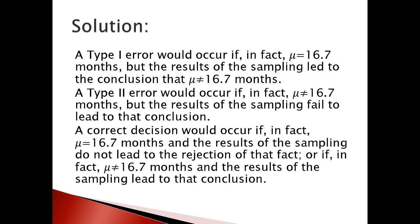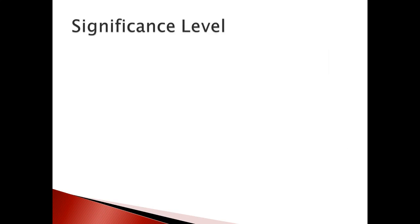Other than these two cases, we make a correct decision. If μ = 16.7 months and the result of sampling does not lead to rejection, that's the correct decision. Or if in fact μ ≠ 16.7 months and the result of sampling leads to that conclusion, that's also the correct decision. Always remember: Type 1 error is rejecting the null hypothesis when it is in fact true; Type 2 error is not rejecting the null hypothesis when it is in fact false.